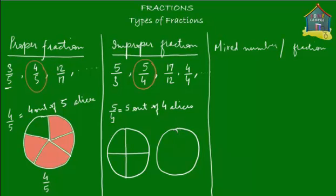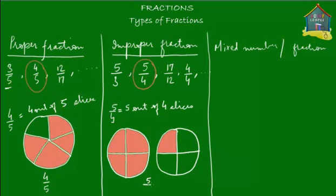You take another pizza and cut it also into 4 slices, because the denominator is still 4. Now let's count 5 slices: 1, 2, 3, 4, and 5. So you have 5 slices, and your improper fraction 5 upon 4 is represented by all these colored slices. All these colored slices together make 5 upon 4 — that's your improper fraction.